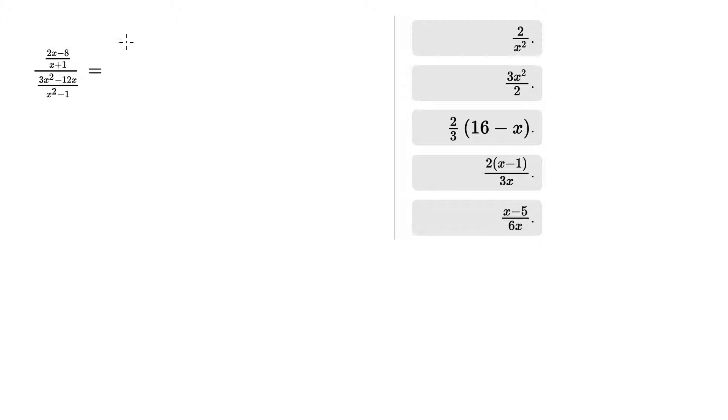To get rid of fractions in the denominator, what you want to do is invert that fraction and multiply it by the numerator. So this is going to become 2x minus 8 over x plus 1, times x squared minus 1 over 3x squared minus 12x.